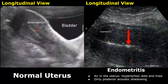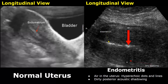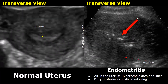Air in the uterus may also be present in some cases of endometritis. Air in the uterus appears as hyperechoic dots and hyperechoic lines with dirty posterior shadowing. A dirty shadow appears gray instead of jet black — it is not as prominent as a clean black shadow seen behind dense structures. Here is another image showing air in the uterus: hyperechoic dots with dirty grayish posterior acoustic shadowing are seen in a case of endometritis.